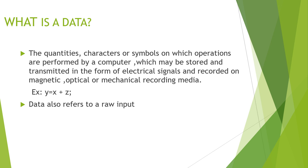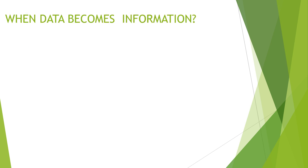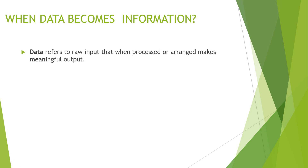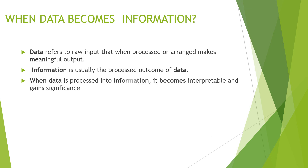Data also refers to raw input. We often interchange the terms data and information, but there is a distinction between them. Data refers to raw input that, when processed or arranged, makes meaningful output. Information is usually the processed outcome of data. When data is processed into information, it becomes interpretable — that is, understandable — and gains significance.